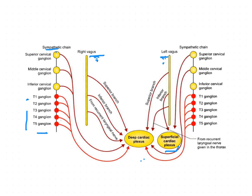Both sympathetic as well as parasympathetic nerves form the superficial cardiac plexus and deep cardiac plexus. Branches from these plexuses run along the coronary arteries to reach the myocardium. The important function of these two types of nerves is to maintain and regulate the heart rate and rhythm.